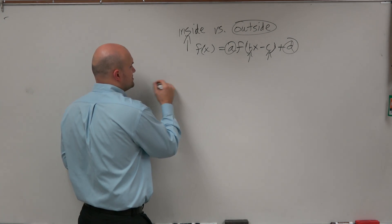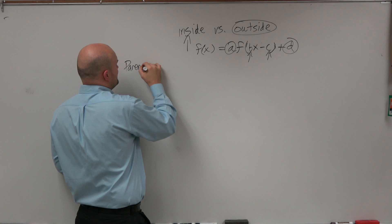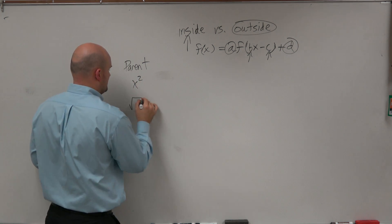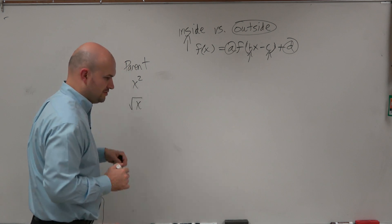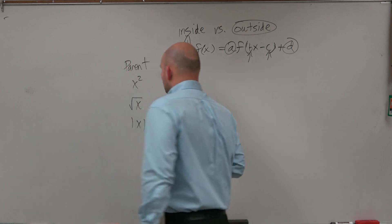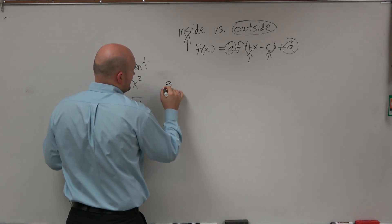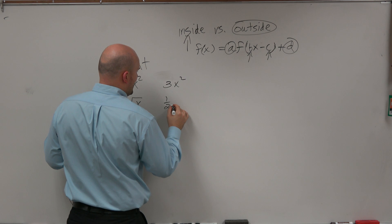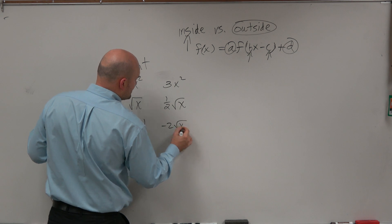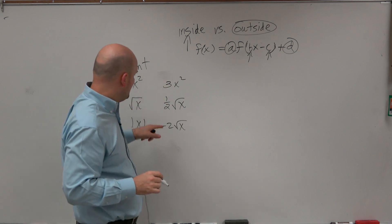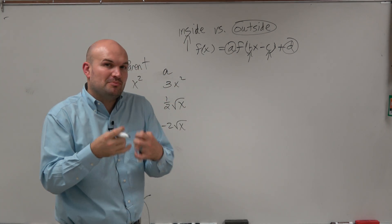When applying a transformation, first understand the parent function — for example, x squared, square root of x, or absolute value of x. If I wanted to apply a transformation outside the function, it might look something like 3x squared, one-half times square root of x, or negative 2 times square root of x. In those cases, the 3, one-half, and negative 2 are all a's — they're all being multiplied outside of the function.